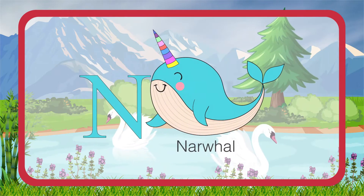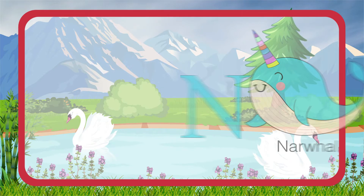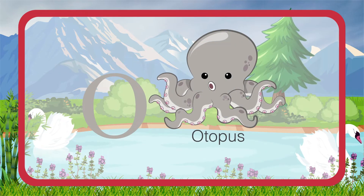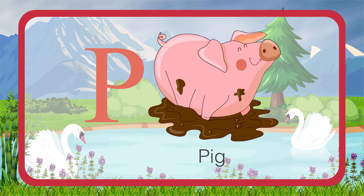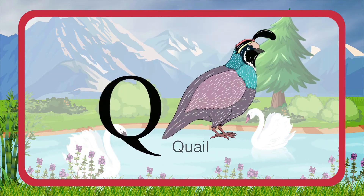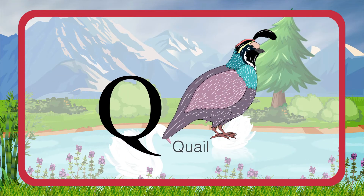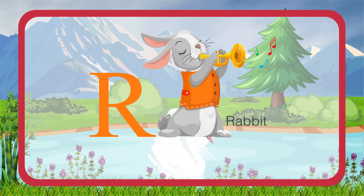M is for Monkey. N is for Narwhal. O is for Octopus. P is for Pig. Q is for Quail. R is for Rabbit.